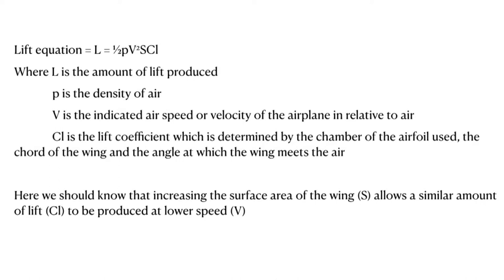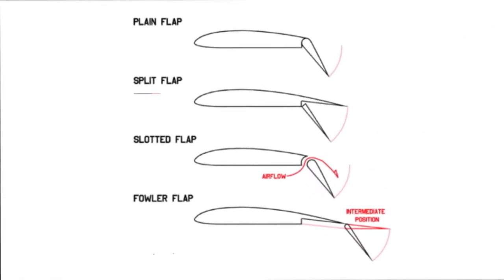Let us look at the different types of flaps. A plain flap is the most simple type where the rear portion of the wing simply rotates downwards. Its efficiency is lower compared to other flaps so it is used only where simplicity is required. Next we have the split flap, where the lower surface of the wing hinges downwards while the upper surface stays the same. At full deflection a split flap acts like a spoiler — producing a lot of drag and little or no lift.